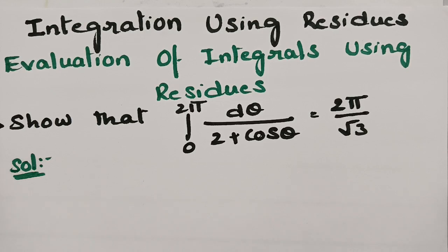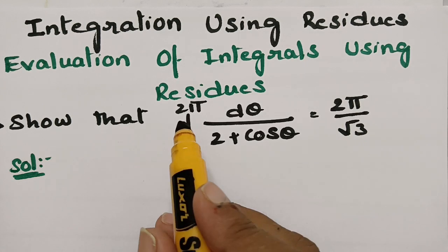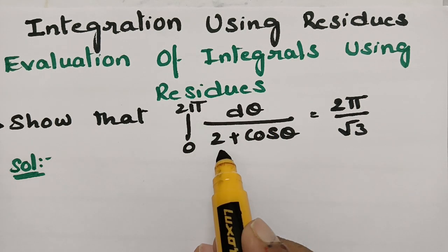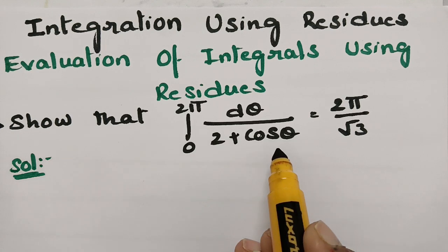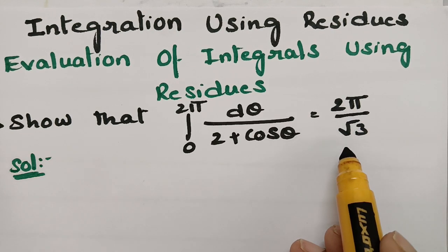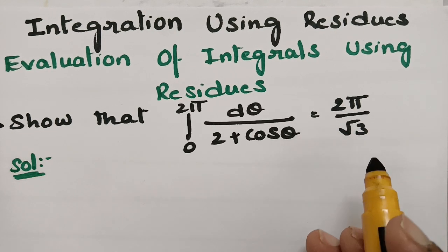This video is on integration using residues. I am going to evaluate the integral using residues, and show that the integral from 0 to 2π of dθ divided by (2 + cos θ) is equal to 2π divided by root 3.